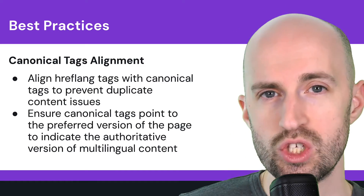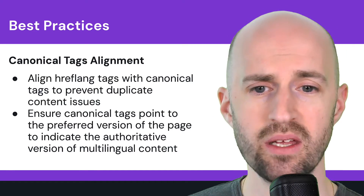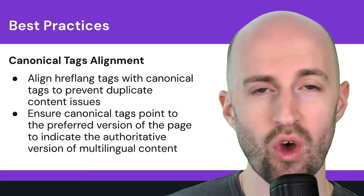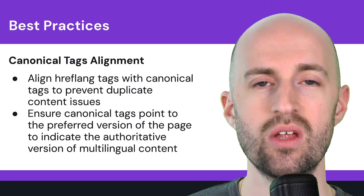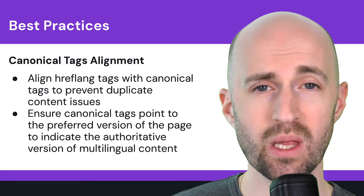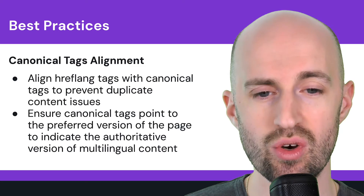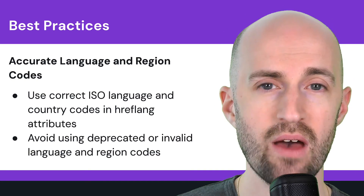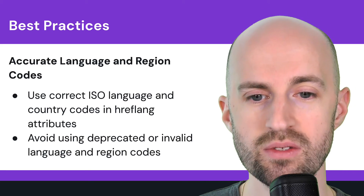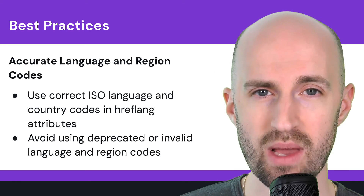It's always good to align hreflang tags and canonicals, using them at the same time to prevent any duplicate content issues within a specific language and region pair. Make sure that if you don't have any duplicates, each canonical tag points to the preferred version of the page and indicates the authoritative version of the multilingual content. You also want accurate language and region codes — look up the ISO language and country codes, and avoid using any deprecated or invalid ones.